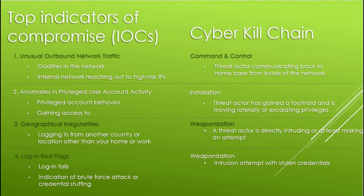Next: anomalies in privileged user account activity. Privileged account behavior can be an indicator of compromise and should be monitored — for example, the head of HR should not be accessing customer information. Odd behavior in an account could also be an indication of privilege escalation, where an attacker vertically pivots to gain access into a higher, more privileged account. This is typically seen in advanced persistent threats, or APTs. This would fall under the installation step, as the threat actor has gained a foothold and is moving around the network to gain more valuable privileges.